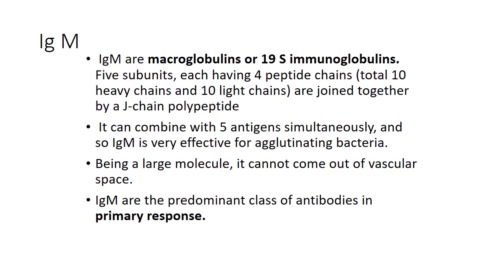Now IgM. IgM are the macroglobulins, or 19S immunoglobulins. It has five subunits, each having four peptide chains — total ten heavy chains and ten light chains — joined by a J chain polypeptide. It can combine with antigens symmetrically, so IgM is very effective for agglutinating bacteria. Being a large molecule, it cannot come out of the vascular space. IgM are the predominant class of antibodies in the primary response.